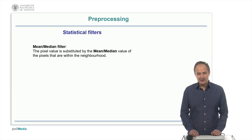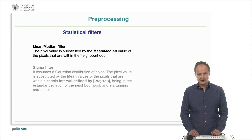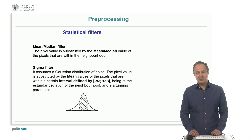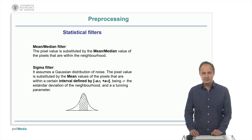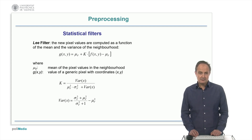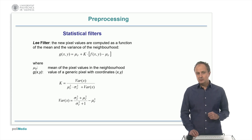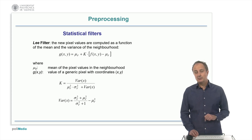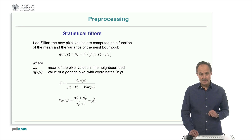The simplest statistical filters are the mean and the median, where the pixel value is substituted by the mean or the median values of the neighbor pixels. A variation is the sigma filter, where the pixel value is substituted by the mean of the neighborhood, assuming a Gaussian distribution and excluding the extreme values, which are considered as outliers. In the Lee filter, the new pixel value is computed as a function of the mean and variance of the neighborhood using a more complex equation. This filter also assumes a Gaussian distribution of the noise.